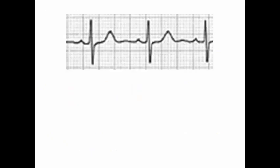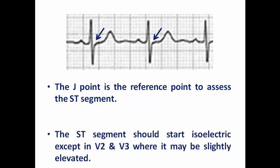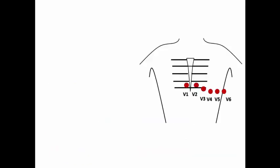Let us first discuss the ST segment itself from the ECG interpretation lecture. There is something called the J-point. The J-point is the reference point used to assess the ST segment — it is the end of the QRS complex and the start of the ST segment. We look at the J-point to decide whether the ST segment is isoelectric, elevated, or depressed. The ST segment should be isoelectric in all precordial and limb leads, except in V2 and V3 where it may be slightly elevated.